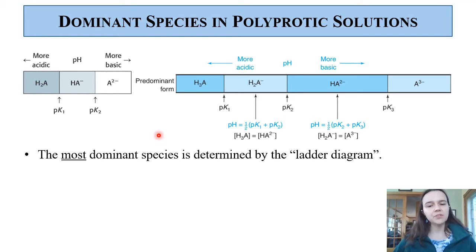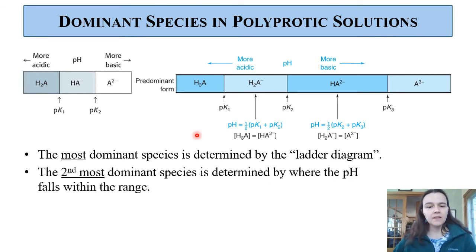We identify the most dominant species using these ladder diagrams at certain pHs compared to certain pKas. We also can figure out the second most dominant species by where the pH falls within the range. So if the pH is going to be closer to this pKa than this one, you would be able to say, like H2A, if this is the pH we're interested in right there, H2A is the most dominant. And then because we're closer to H3A on the left, that's the second most dominant.